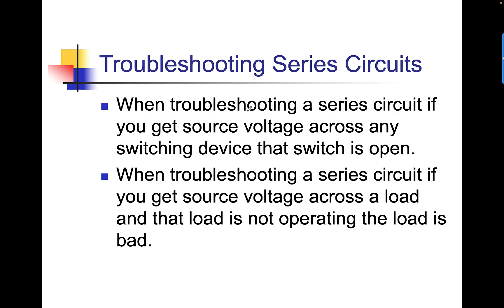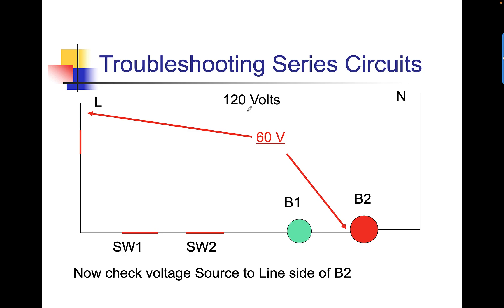When troubleshooting a series circuit, if you get source voltage across a load and that load is not operating, the load is bad. So if we go back here and if I get source voltage across B1, but B1 is not operational, it tells me there's an open in B1 and that load is bad.